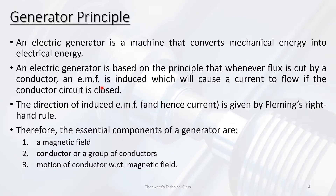Normally an electric generator converts mechanical energy into electrical energy. Now we have a generating station — a hydroelectric generating station. It has a high head, a penstock pipe, a generator rotor, and a Pelton wheel. Rotational mechanical energy is converted into electrical energy.